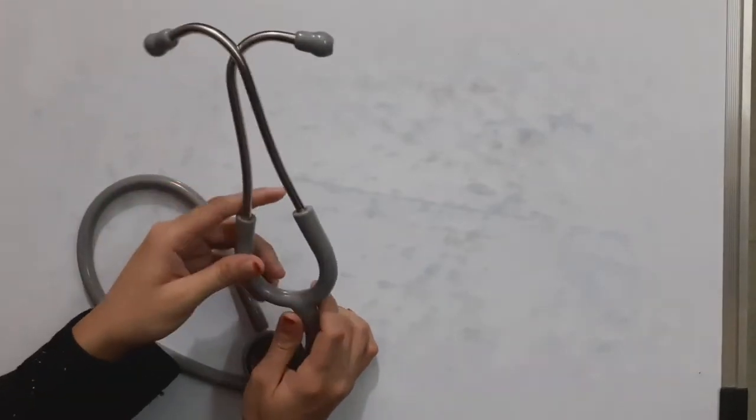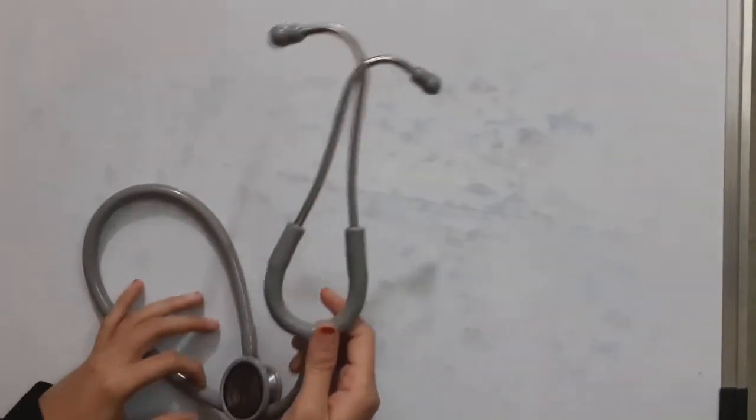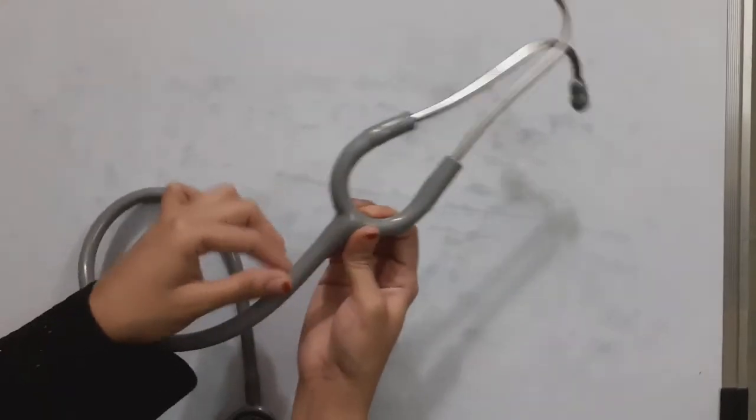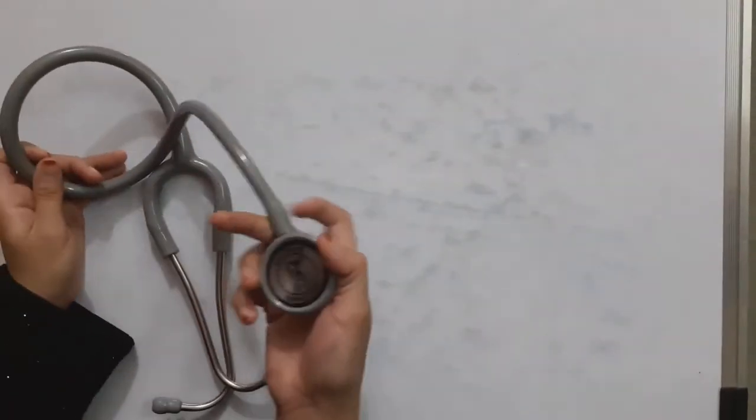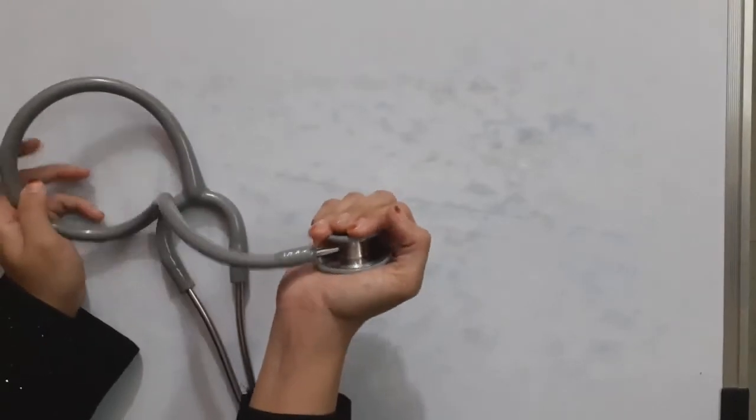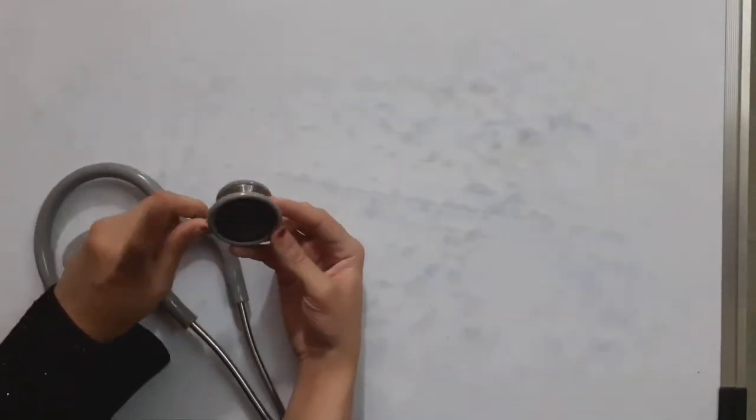Then there's the binaural spring and rubber tubing. This entire piece is called the chest piece, and it has the bell and the diaphragm.